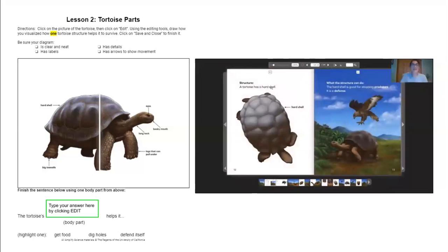Structure: A tortoise has a hard shell. What the structure can do: The hard shell is good for stopping predators. It is a defense. New vocabulary words: Predators and defense. Let's talk about predators. Predators are animals that hunt other animals for food. For example, a lion would hunt a zebra for food. There are different kinds of predators in the world. So remember, a predator is an animal that hunts other animals for food. Predator: Hunter. Can you try? Predator: Hunter. And defense. Defense means to protect oneself. Defense means to protect. Can you guys try? Defense means to protect. Good job. Let's keep reading.